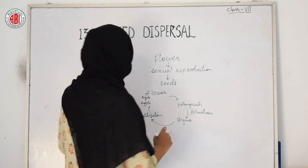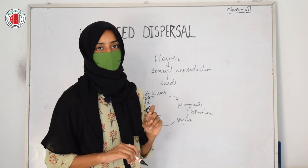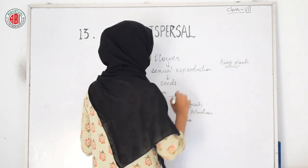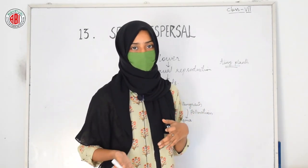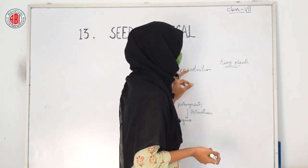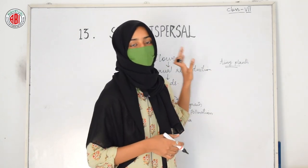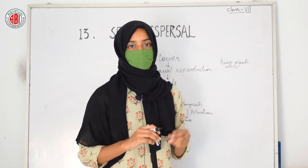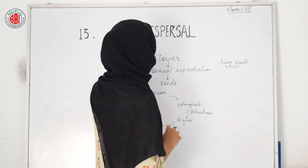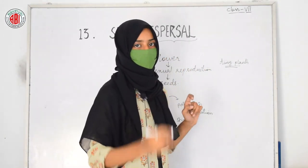After the process of fertilization, a zygote is formed and that zygote produces seeds inside the fruit. In this way, reproduction in plants helps in the formation of seeds, and seeds are the parts from which we can get tiny plants. Basically, reproduction is a process that helps to produce new plants from the parental one. Seeds play a very important role in the development of tiny plants.